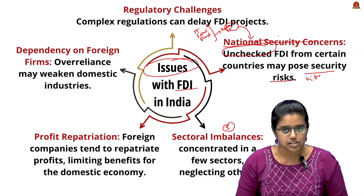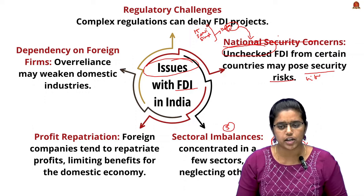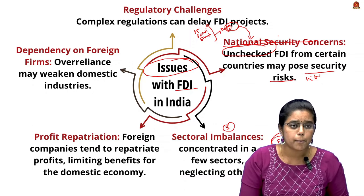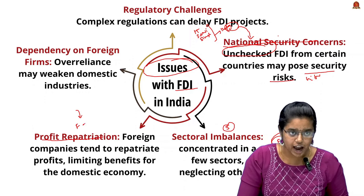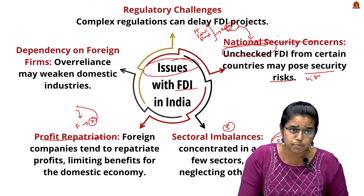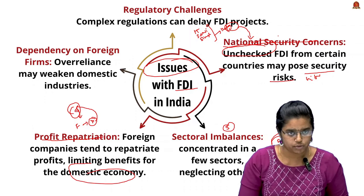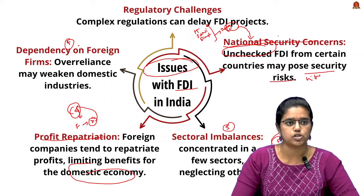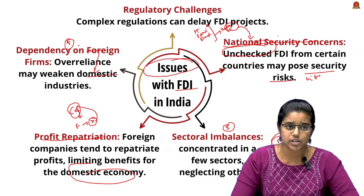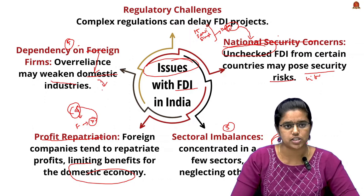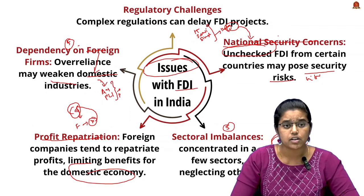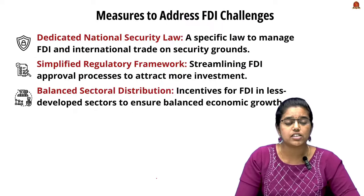Third is sectoral imbalance — FDI is mostly concentrated in IT and services and is not prominent in agriculture and allied sectors. Fourth is profit repatriation — foreign companies may send profits back to their home country, limiting benefits for the domestic economy. Fifth is over-reliance on foreign firms, which can weaken domestic industries. That is why schemes like Atmanirbhar Bharat and the Production Linked Incentive scheme were introduced to promote domestic industries.